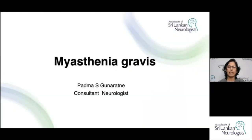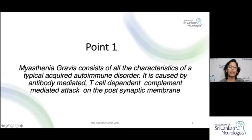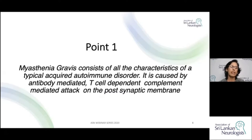In the next 30 to 40 minutes we would be talking on another important topic for neurologists: myasthenia gravis. We will cover 10 pearls. The first pearl is that myasthenia gravis consists of all the characteristics of a typical acquired autoimmune disorder.